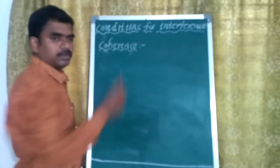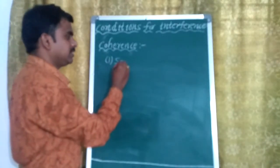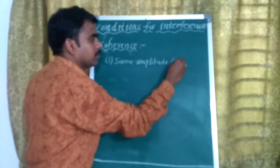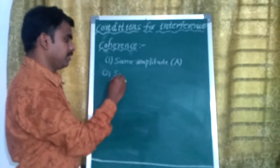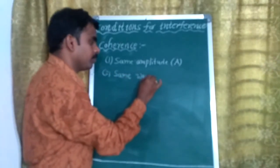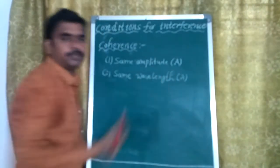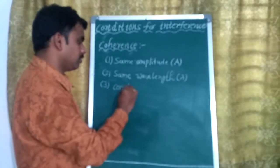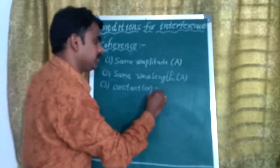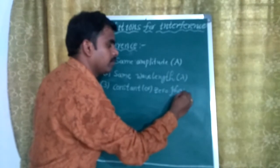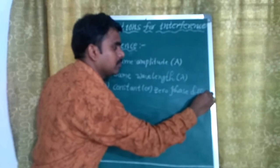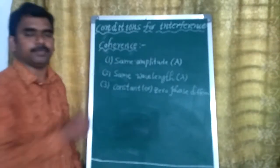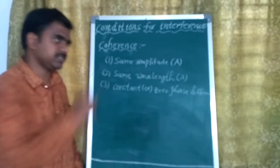Coherent waves means the waves should have the same amplitude, same wavelength. And the third condition is a constant or zero phase difference. That means the waves should have same amplitude, same wavelength, and constant phase difference or zero phase difference.